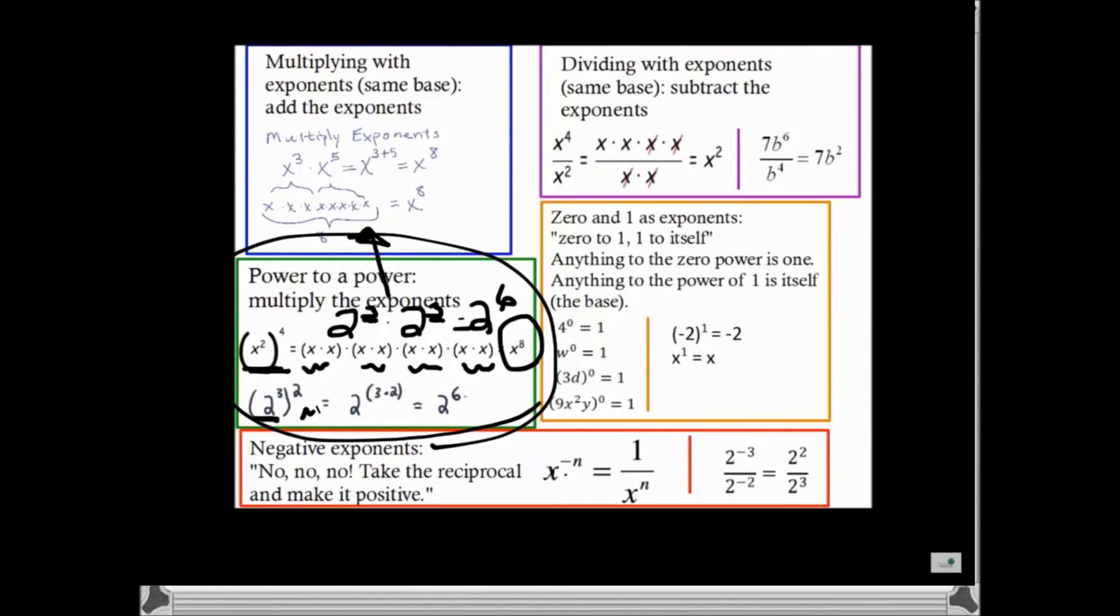When we expand it, you are able to add the exponents. When you look at the problem and it is just a power to a power, you are able to take a shortcut and multiply the exponents.